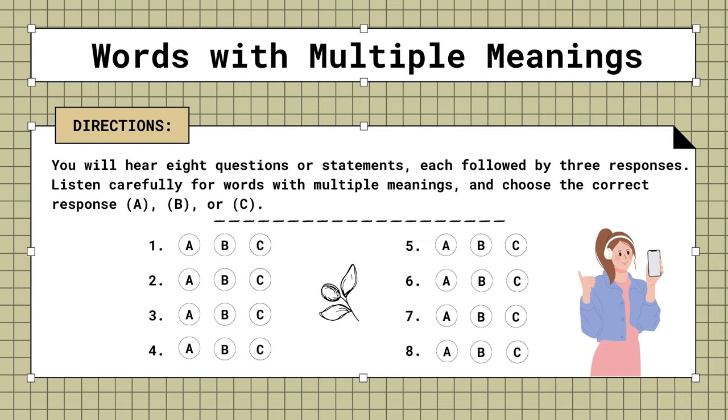8. How about a game of tennis? A. I don't know how to play. B. Can you play that again? C. It's a boring play.